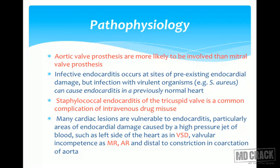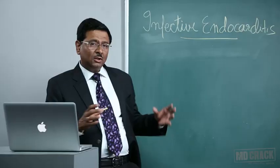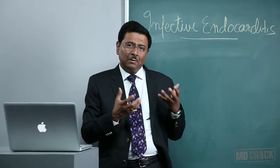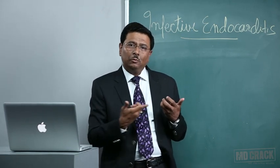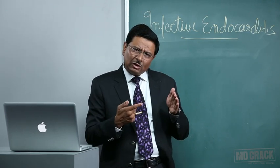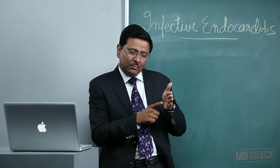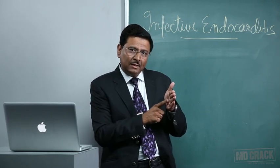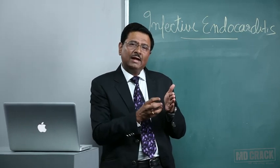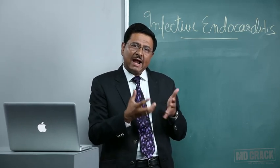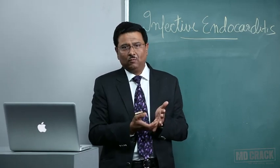Many cardiac lesions are vulnerable to endocarditis, particularly areas of endocardial damage caused by a high-pressure jet of blood, such as the left side of the heart in ventricular septal defect. In VSD, the large pressure gradient produces a jet of blood that damages the endocardium; platelets and fibrin deposit there, which then get colonized by bacteria and form vegetations.